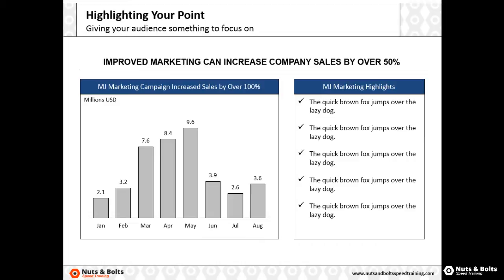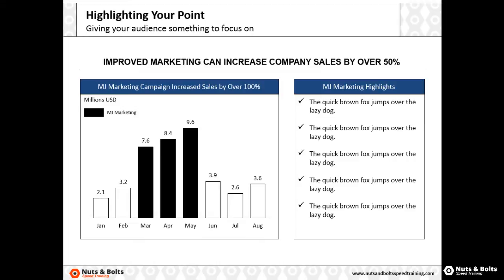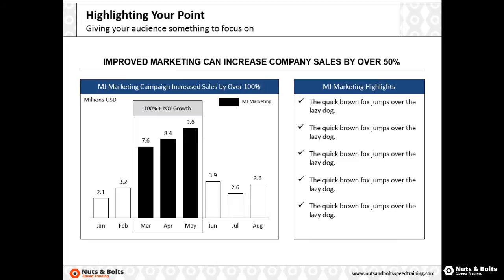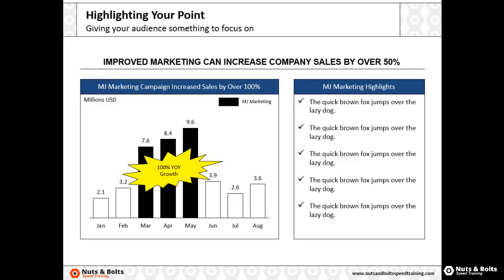After you establish your point in the titles, you want to highlight the actual data points you want people to focus on. You can do something like this, which helps clarify and draw people's attention to the point of your slide. You could also continue to add highlights — for example, you could box up the months to further highlight your point, or simply add a callout.